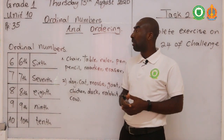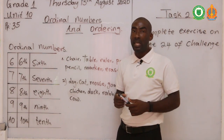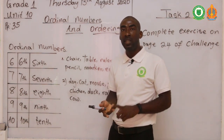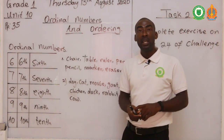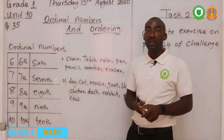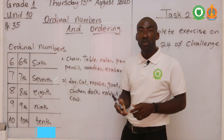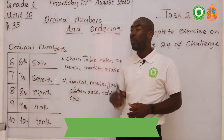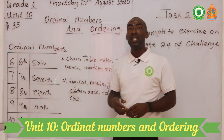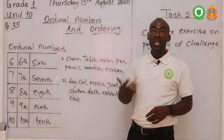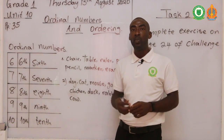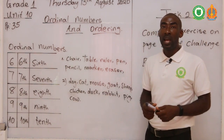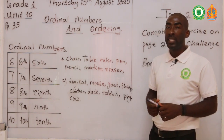We started with one through ten. Number one means first, two means second position, three means third, four means fourth, five means fifth, six means sixth, seven means seventh, eight means eighth, nine means ninth, and ten means tenth position. Let's look at some examples. The first list has: chair, table, ruler, pen, pencil, marker, and eraser. The second list has: dog, cat, mouse, goat, sheep, chicken, duck, rabbit, pig, and cow.